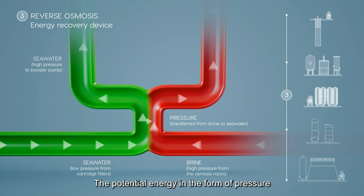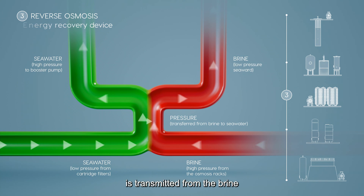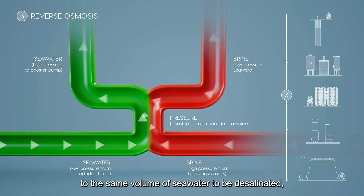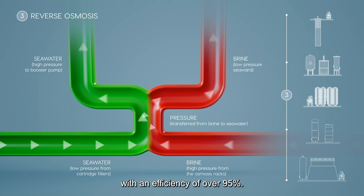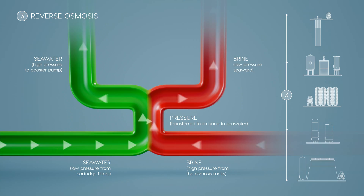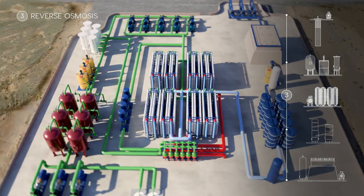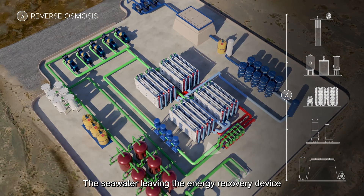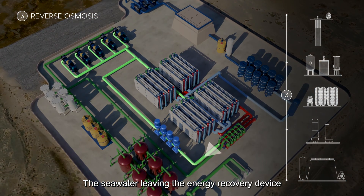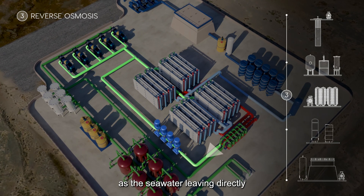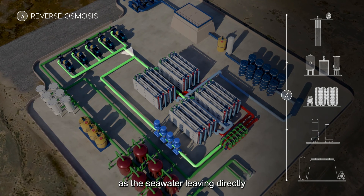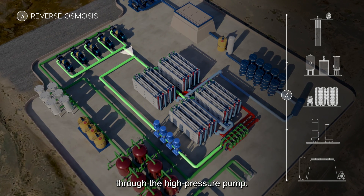The potential energy in the form of pressure is transmitted from the brine to the same volume of seawater to be desalinated, with an efficiency of over 95 percent. The seawater leaving the energy recovery device does not have the same pressure as the seawater leaving directly through the high pressure pump.